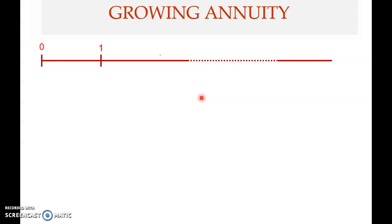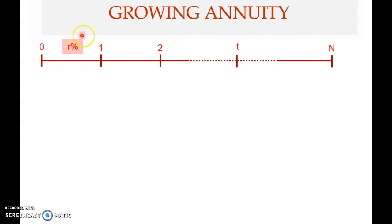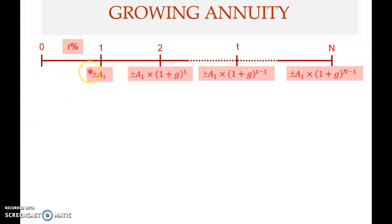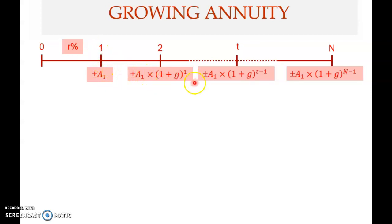Let's look at the timeline for growing annuity: from zero (now), one period from now, two periods from now, up to T periods and N periods from now. The interest rate is given. The payment at the end of period one is A1; at the end of period two it is A1 multiplied by (1+G)^1. For period T the payment is A1 × (1+G)^(T-1), and at period N it is A1 × (1+G)^(N-1).